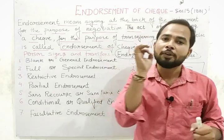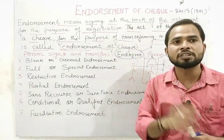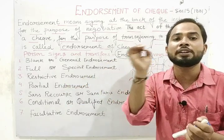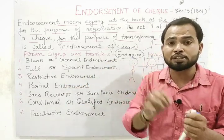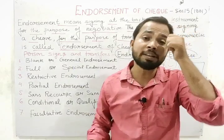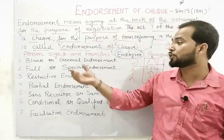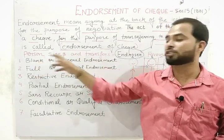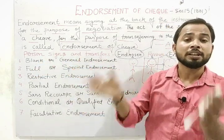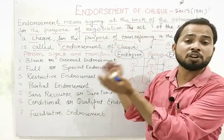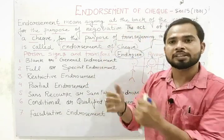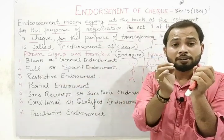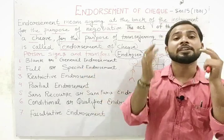Blank — something is missing. In blank endorsement, the endorser provides their signature but does not mention the name of the endorsee. So the signature is given but the name of the next person is not written. Such type of endorsement is known as blank endorsement, also called general endorsement.